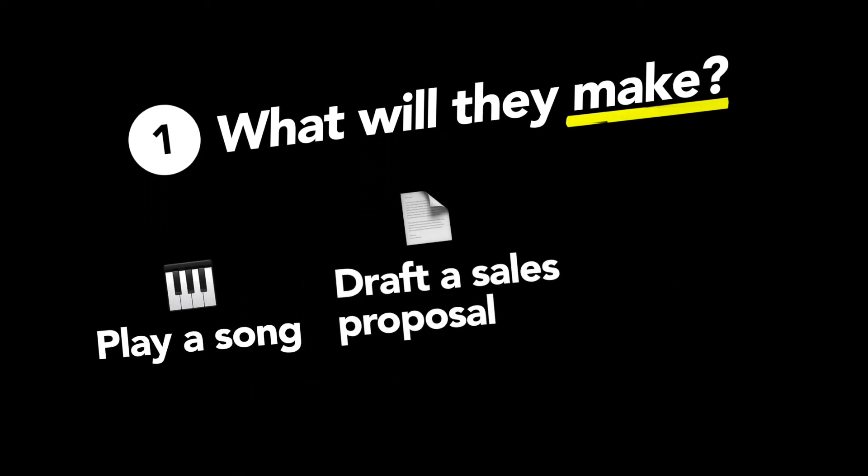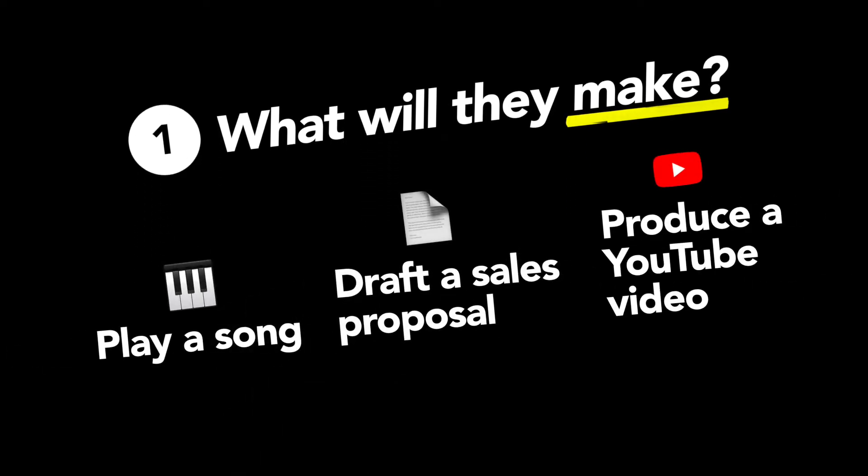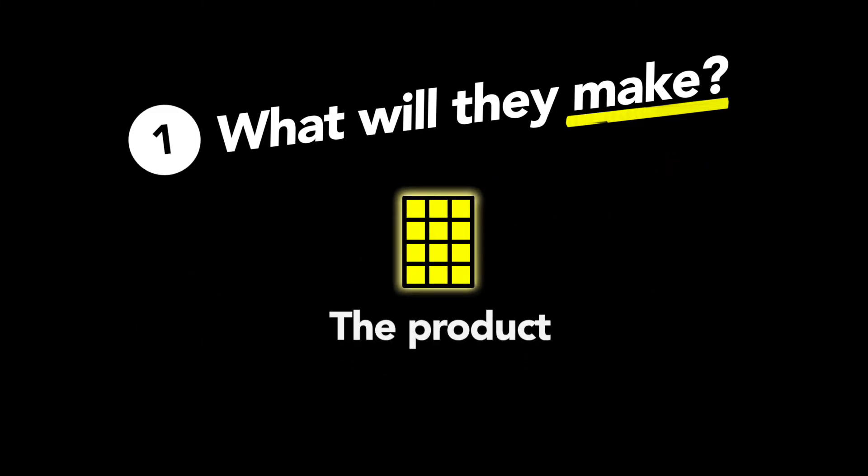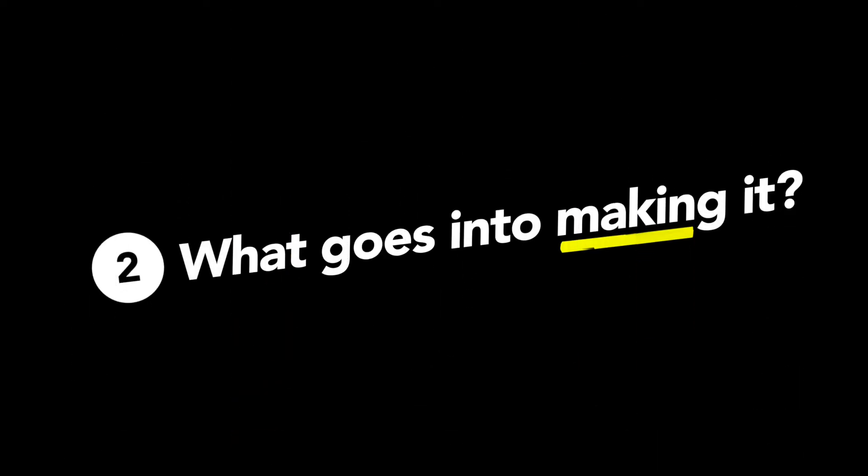What is the single most important thing someone can do in your profession with the set of skills you're teaching? It should be something tangible. For example, once you've taught someone this skill, they'll be able to play a song, draft a sales proposal, or produce a YouTube video. This should ideally be something that you know people are interested in and that you're comfortable making. This end product is the focus point for your course.